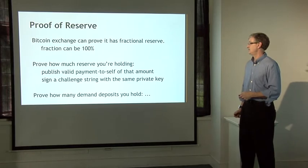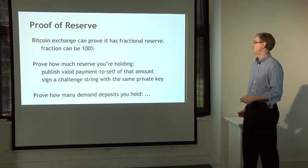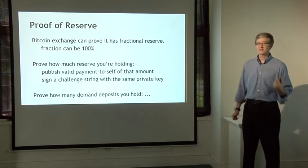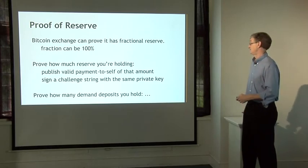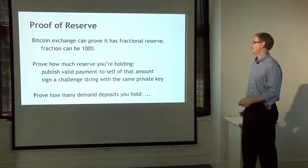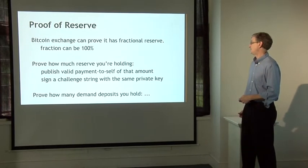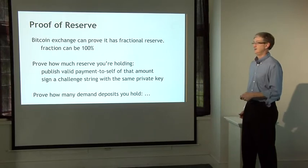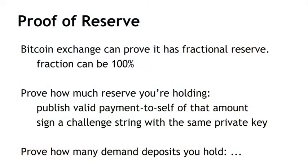The goal is that a Bitcoin exchange can prove that it has a fractional reserve — for example, that it has at least 25%, or maybe 100%, of the deposits people have made available and under its control. The proof of reserve works by breaking the problem into two pieces. First, you prove how much reserve you're holding — the relatively easy part. The company publishes a valid payment-to-self transaction of that amount. If they claim to have 100,000 Bitcoins, they create a transaction paying 100,000 Bitcoins to themselves and show it's valid. Then they sign some challenge string — a random string generated by an impartial party — with the very same private key used to validate that payment-to-self transaction. That proves that someone who knew that private key was participating in this proof of reserve.